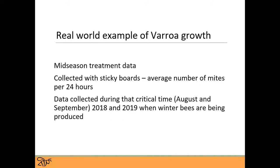In terms of a real world example of mite growth, at TTP in 2018 and 2019 we were doing a mid-season treatment study. The data was collected through sticky boards, where you calculate the average number of mites for a 24-hour period by putting the sticky board underneath the hive, leaving it for three days, then taking it out and counting all the varroa mites as a natural mite fall. This data was collected all in August and September of 2018 and 2019 — that critical time when winter bees are being produced — comparing untreated control colonies with treatment colonies.